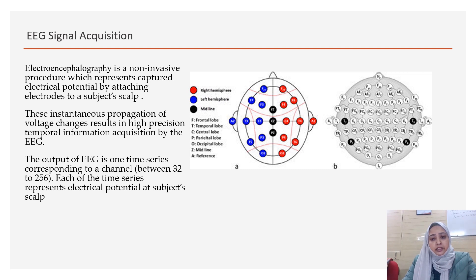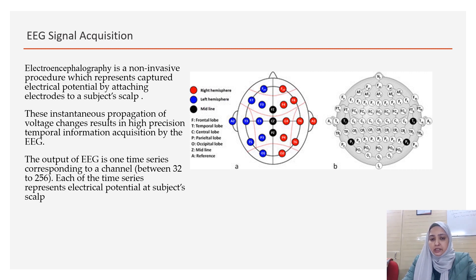The EEG signal database that we have worked upon consists of channels — time series corresponding to each channel — between 32 and 256, and each of the time series represents an electrical potential at the subject cap. As depicted in the figure, there are 32 electrodes present in the cap, because the positioning of each electrode is as per the area of the brain, and each area of the brain generates a unique signal pertaining to a specific task.